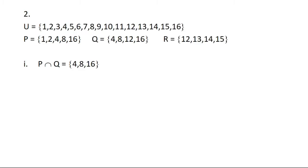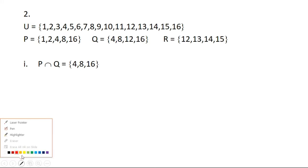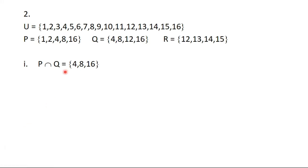The first part of question 2 says we should find P intersection Q. We are looking at members that are in both P and Q, and they are 4, 8 and 16.